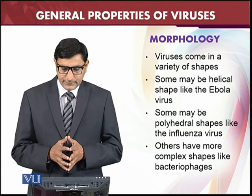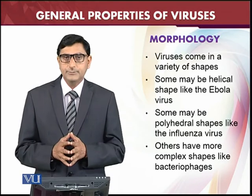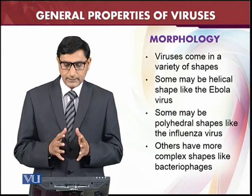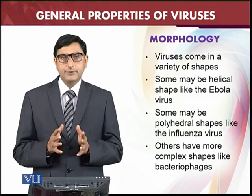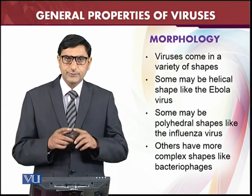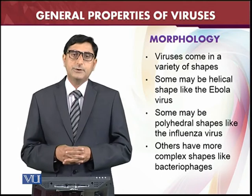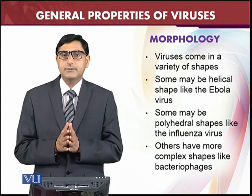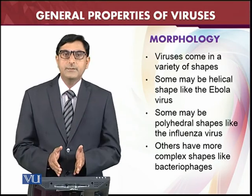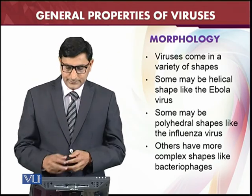Viruses come in a variety of shapes. Some are helical in shape — for example, the Ebola virus is helical. Some are icosahedral in shape, and some are polyhedral, such as the influenza virus. Others have complex shapes, like bacteriophages, which contain a helical structure combined with icosahedral symmetry.